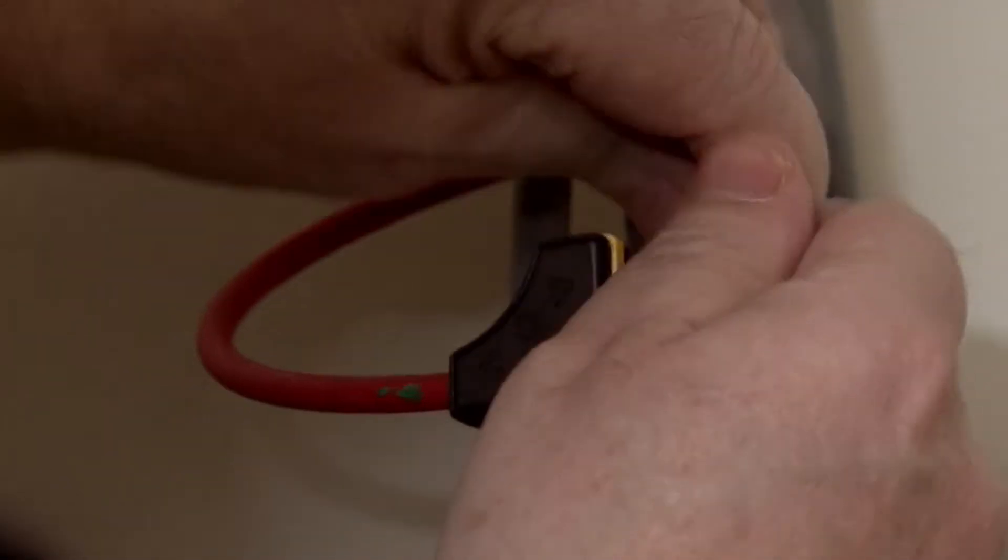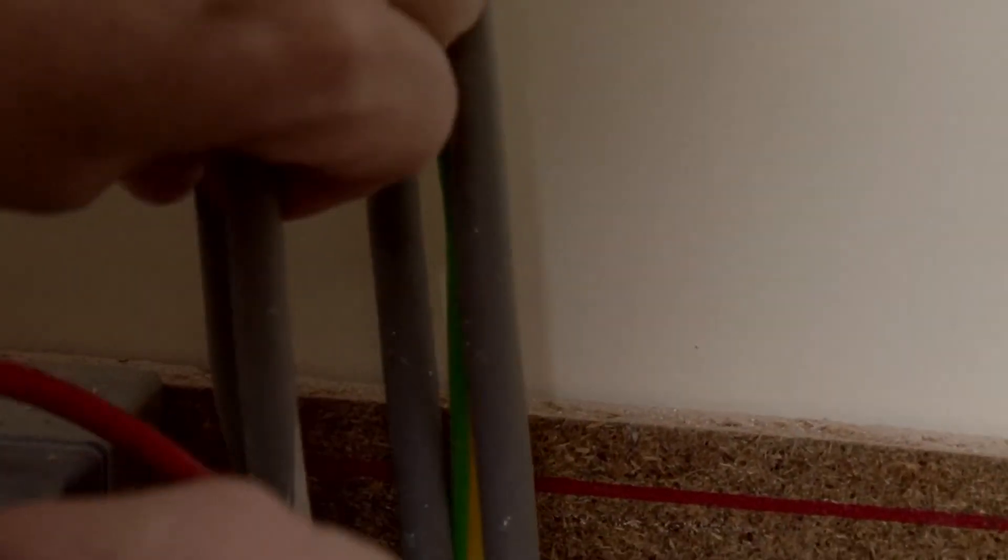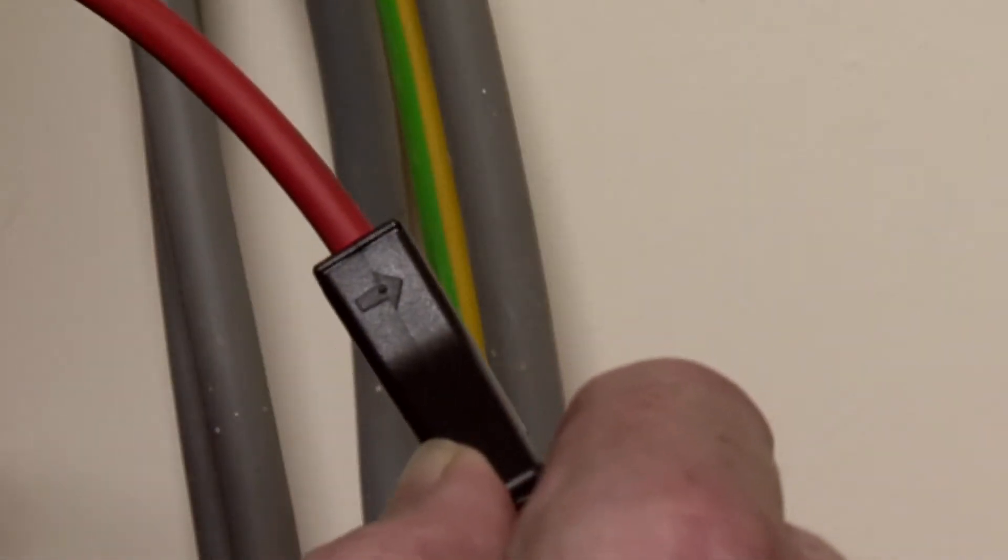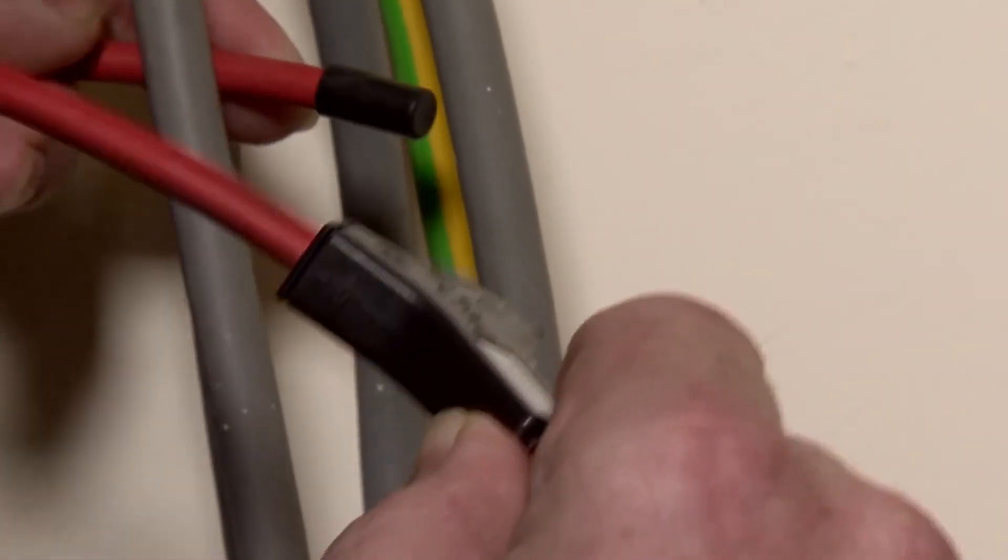Now attach the current clamps. The flexible clamp is opened by pushing on the side. It can then be looped around the conductor. Care should be taken to ensure the arrow shown here points in the direction that the power is flowing, so from the supply to the load.